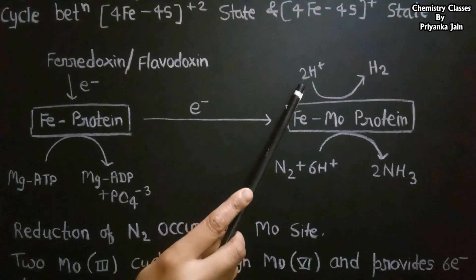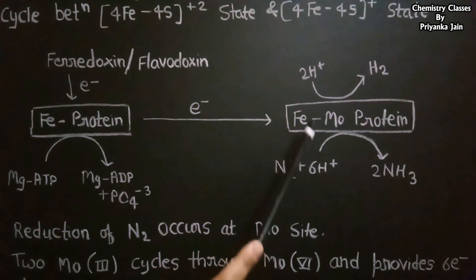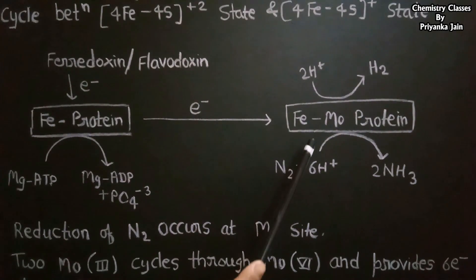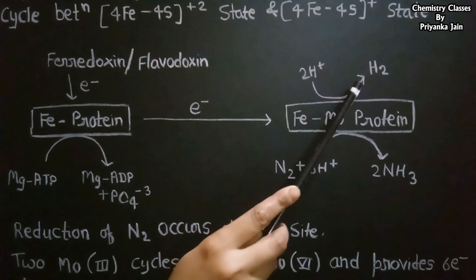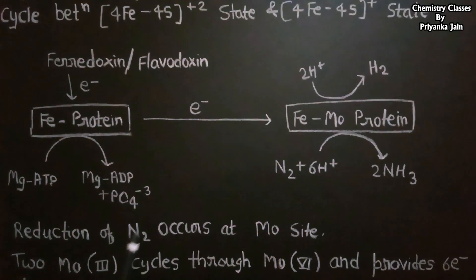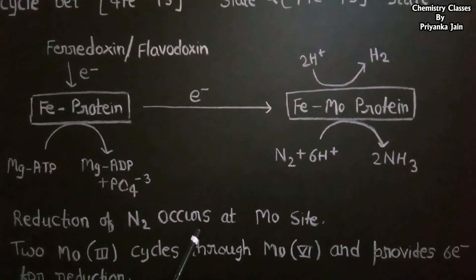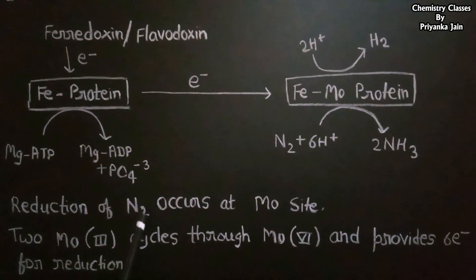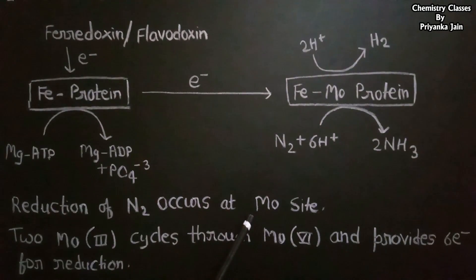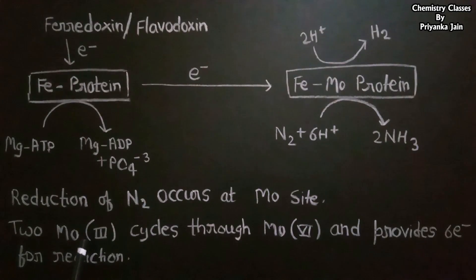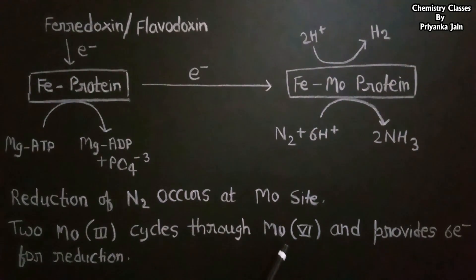At the iron-molybdenum protein, protons are converted to H2, and the nitrogen is reduced by 8 electrons and 6 protons to form NH3. The reduction of nitrogen occurs at the molybdenum site — the active site for nitrogen reduction is molybdenum. The two molybdenum atoms cycle from the +3 oxidation state through to +6, providing the 6 electrons necessary for the reduction. In this way, the reduction of nitrogen takes place.